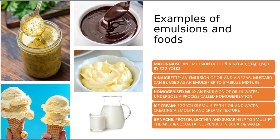Mayonnaise is an emulsion of oil and vinegar, stabilized by the lecithin in egg yolks. Vinaigrette is an emulsion of oil and vinegar, and mustard can be used as an emulsifier to stabilize the mixture. Homogenized milk is an emulsion of oil in water, and it undergoes a process called homogenization which helps to emulsify the milk.